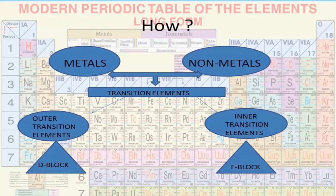Throughout the transition metals, elements can form numerous oxidation states. For example, vanadium — atomic number 23 — can have oxidation states of +2, +3, +4, and +5. If you were to make a solution of vanadium, you could tell which oxidation state was present because the color of the solution changes drastically with each oxidation state.